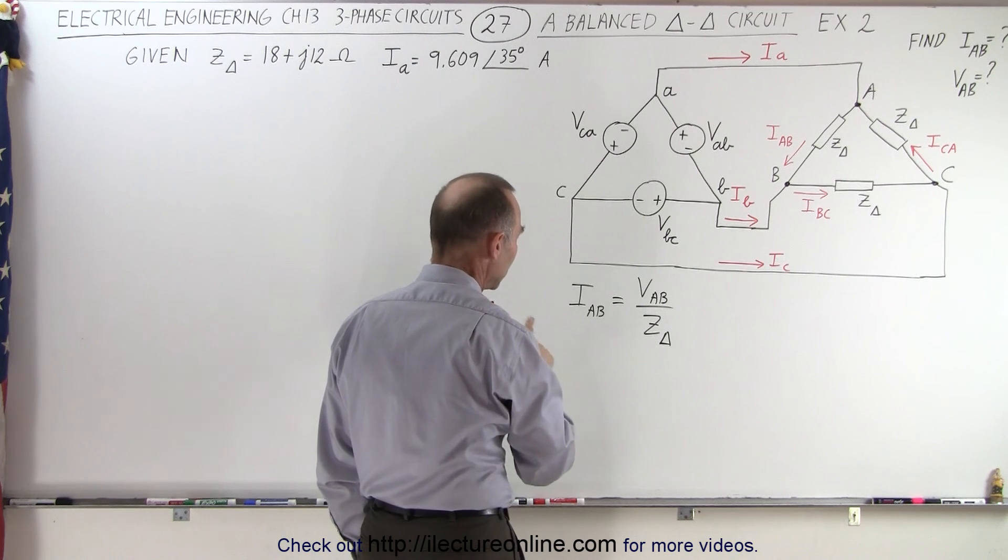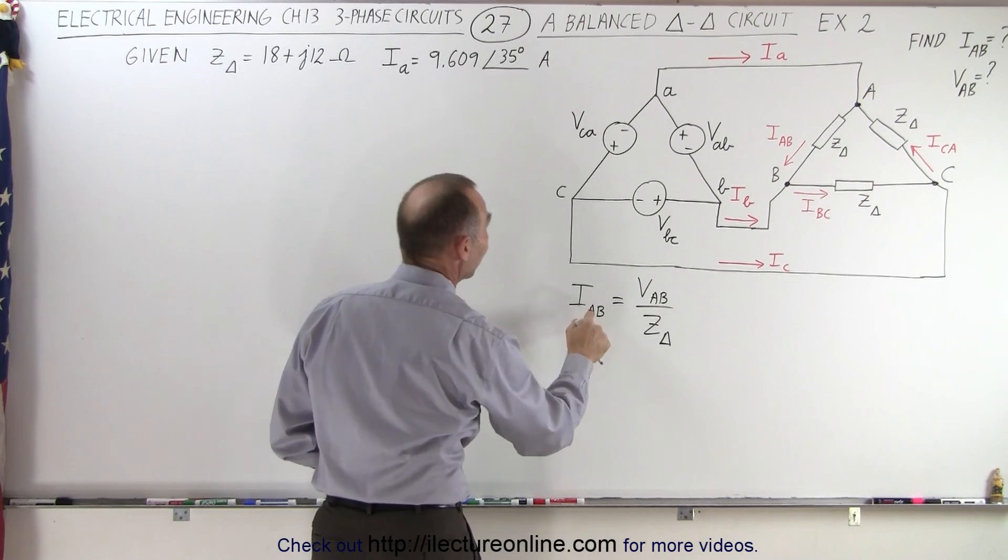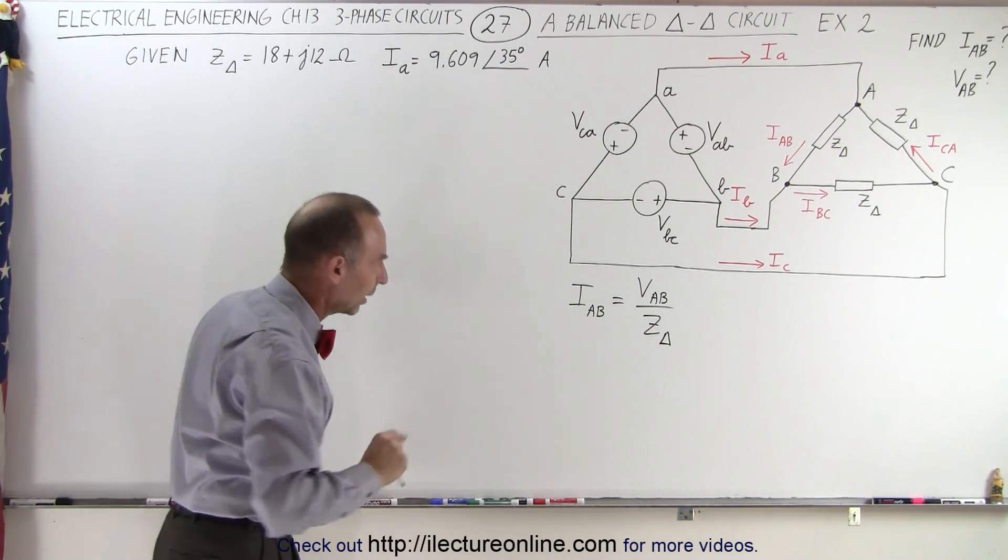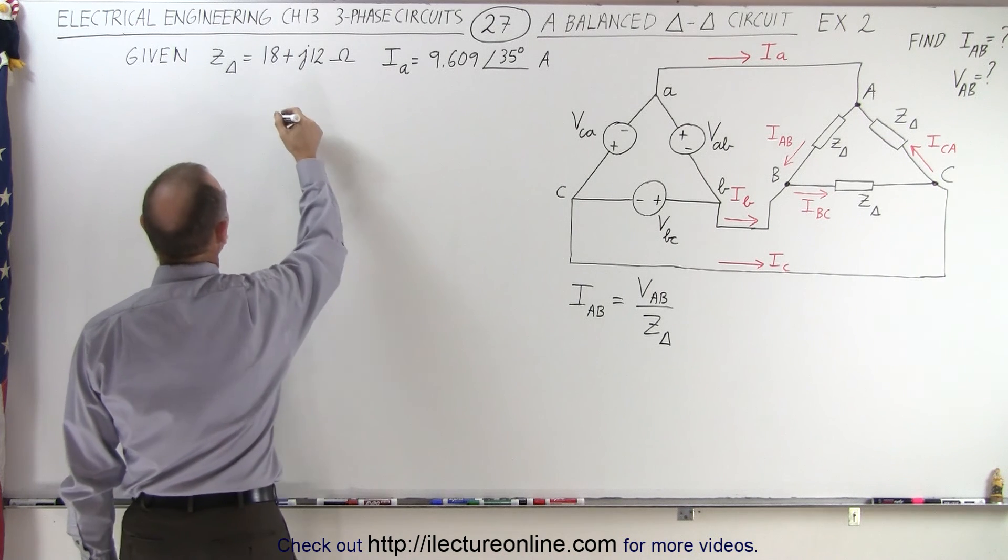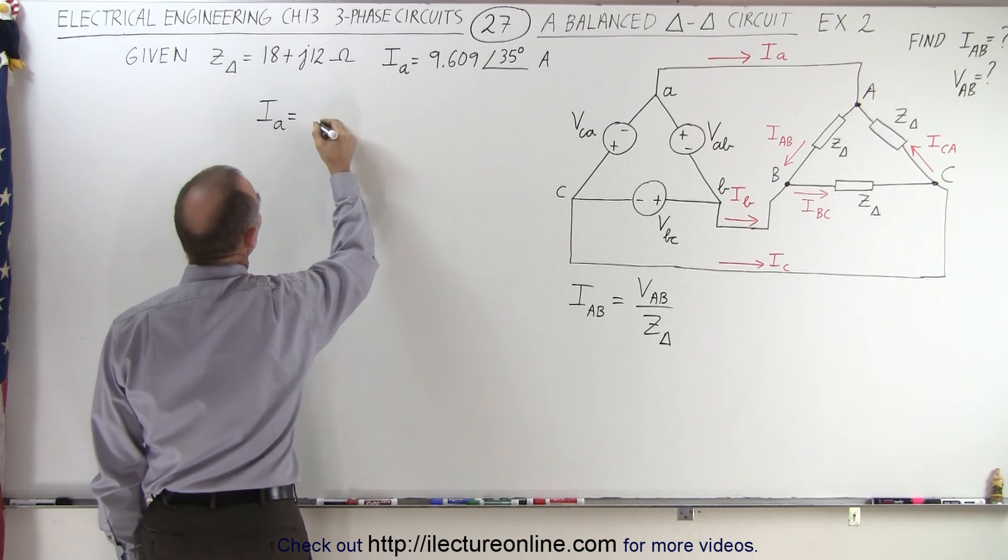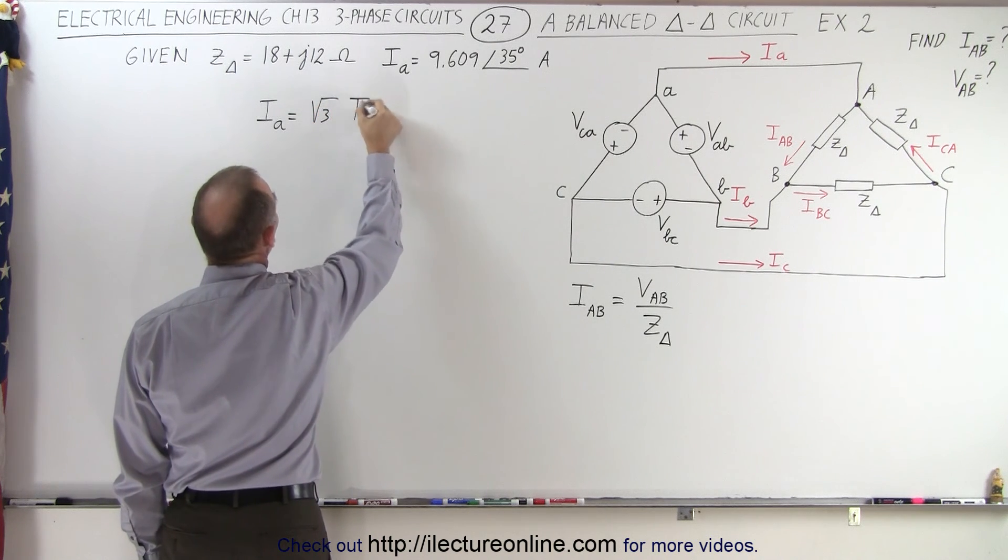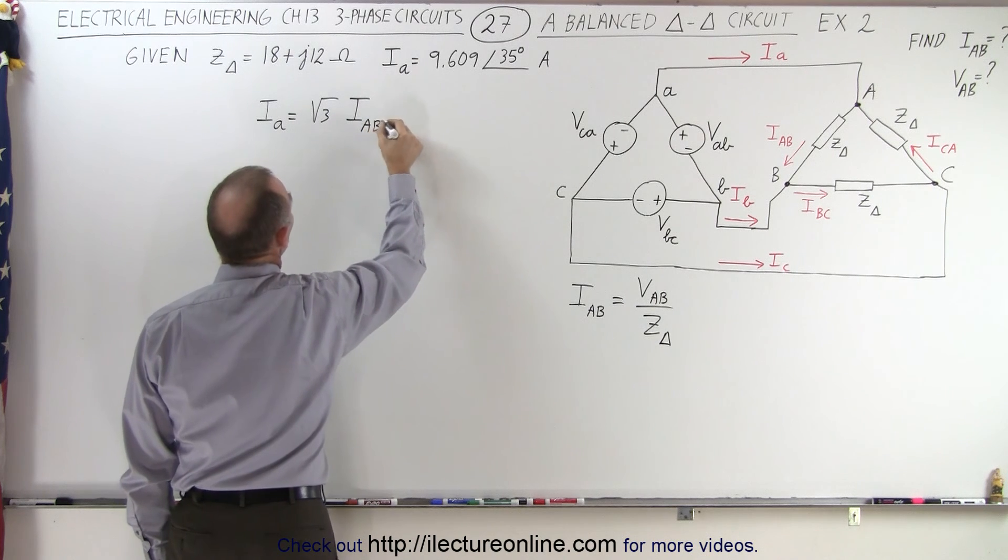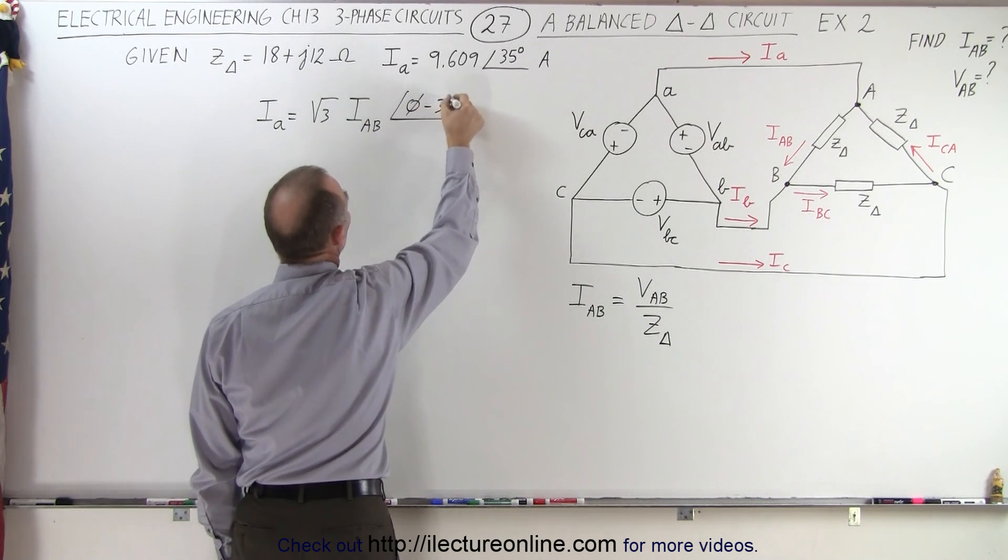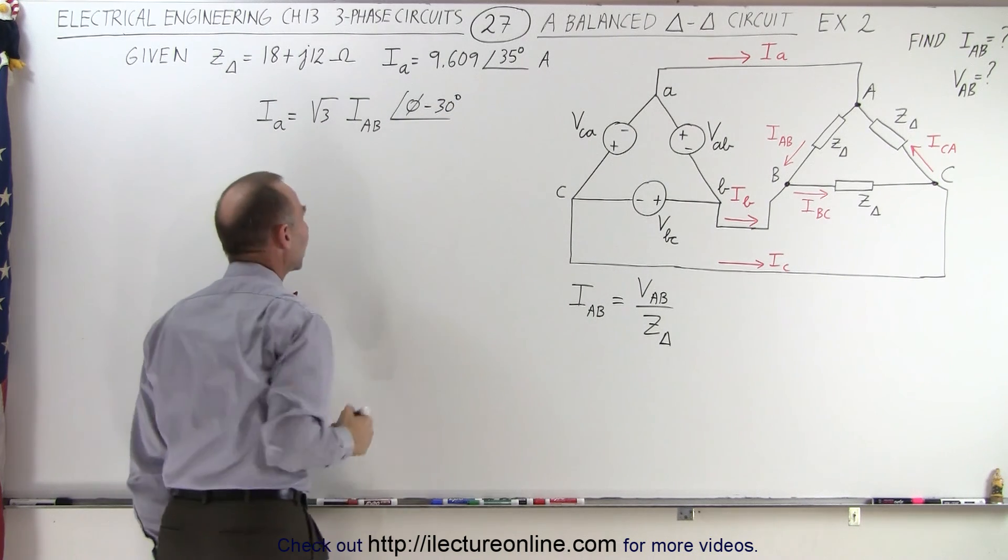So, what I need to do is, since only one of the three here is known, we can find the phase current, because we're given the line current. There's a relationship there, and we know that the line current I sub A is equal to the square root of three times the magnitude of the phase current IAB, with a phase difference, such that we subtract 30 degrees from the phase of the phase current to get the line current.